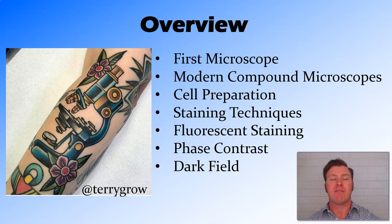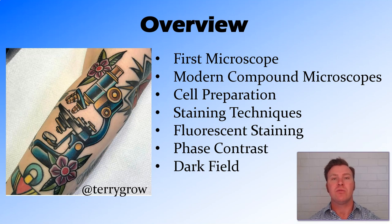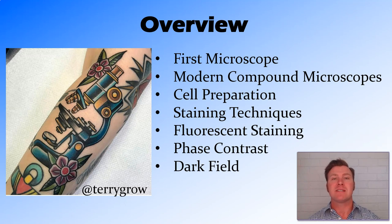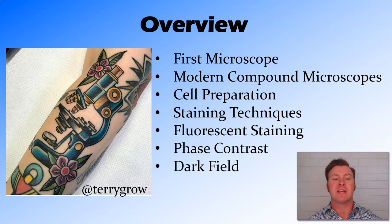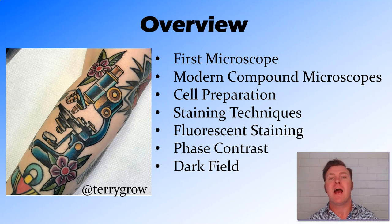In this video we've talked about that first microscope developed in the 1600s and how it differs to modern compound microscopes. We've talked about the preparation of very thin specimens, staining techniques using modern dyes to give us a better idea of the structures inside cells, including fluorescent staining that glows with a particular light, and a couple of different filters including phase contrast, which is based on refraction, and the dark field microscope.